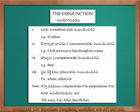Some words function both as conjunctions and as prepositions. Examples: till, since, for, after, but, before. So, when identifying a conjunction, you need to know how many types it has and how it is used.